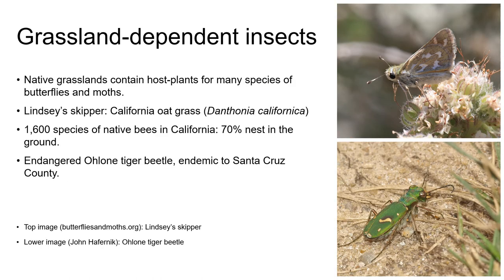The grass and forb diversity in grasslands also supports a wide range of insects including beetles, butterflies, moths and bees, many of which in turn provide food for small vertebrates and birds. We have a tendency to associate butterflies with colourful flowering plants, but there are butterfly species that rely on native grasses as their larval host plants, and then the adults feed on the nectar provided by the forbs.